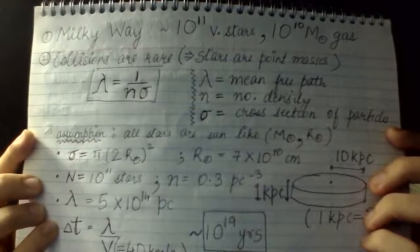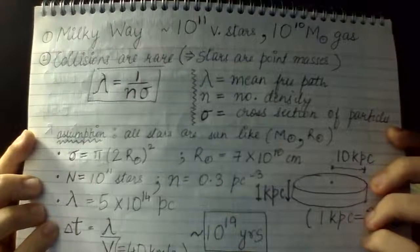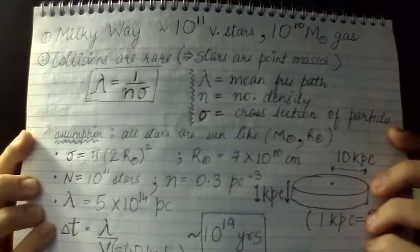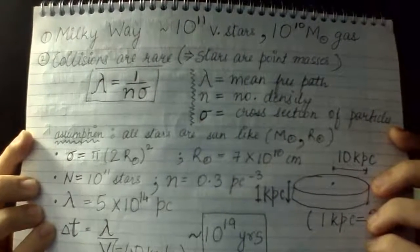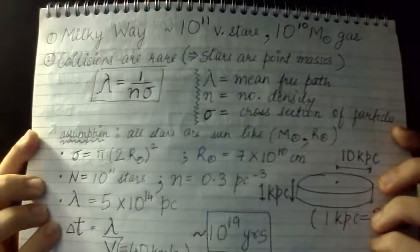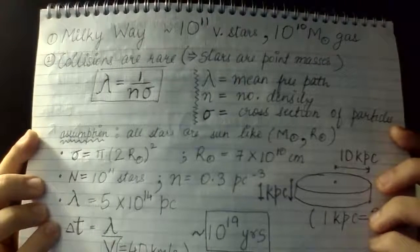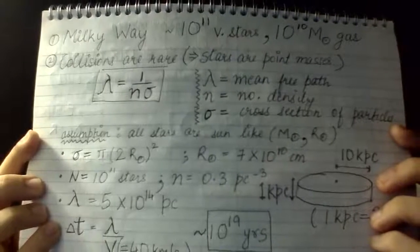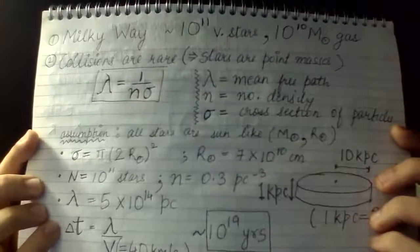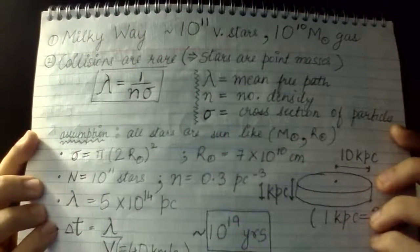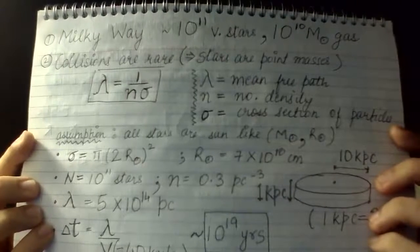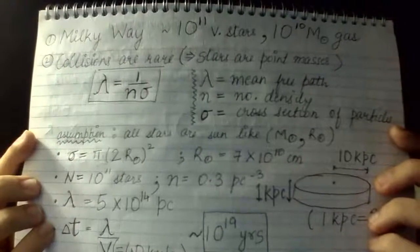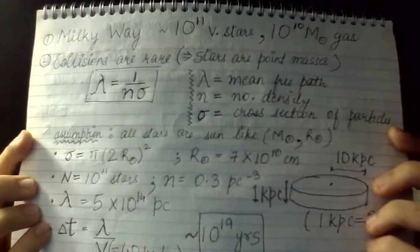Prerequisites for this and upcoming lectures: I'm assuming basic knowledge of coordinate systems — we'll be dealing in spherical, cylindrical, and Cartesian coordinates, including velocity and position conversions between them. I'm also assuming knowledge of basic classical mechanics like Lagrangian, Hamiltonian, and canonical momenta. The symbols I'll use are the usual Greek letters: phi for gravitational potential, rho for density distribution, etc.